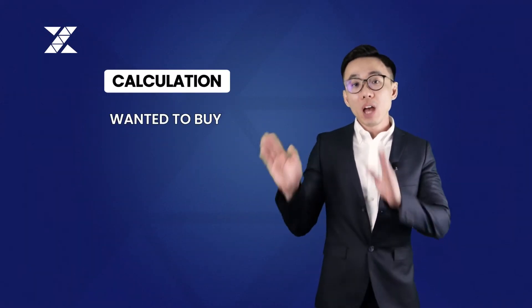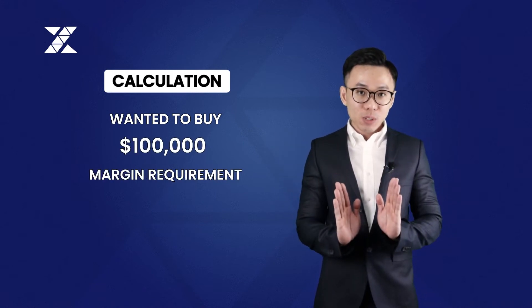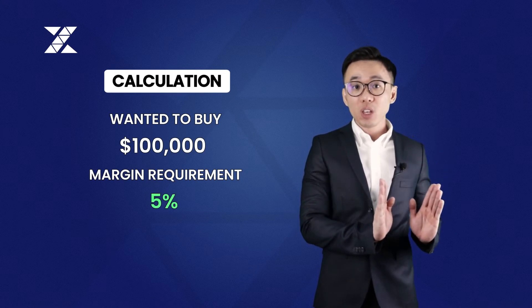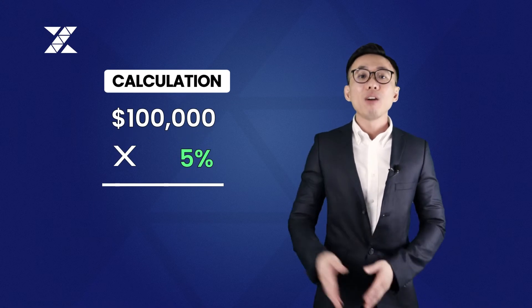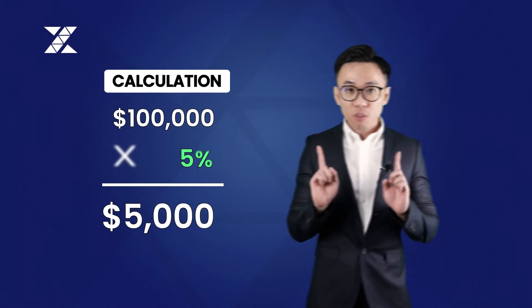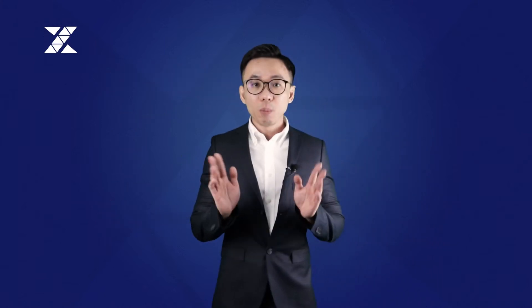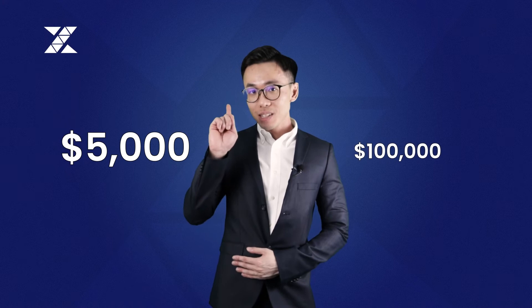We are going to take 100,000 US dollars multiplied by 5% of the margin requirement, and we will get 5,000 US dollars. So in order for you to open a position of GBPUSD amounting to 100,000 US dollars, you will only need 5,000 US dollars. It's just that simple.